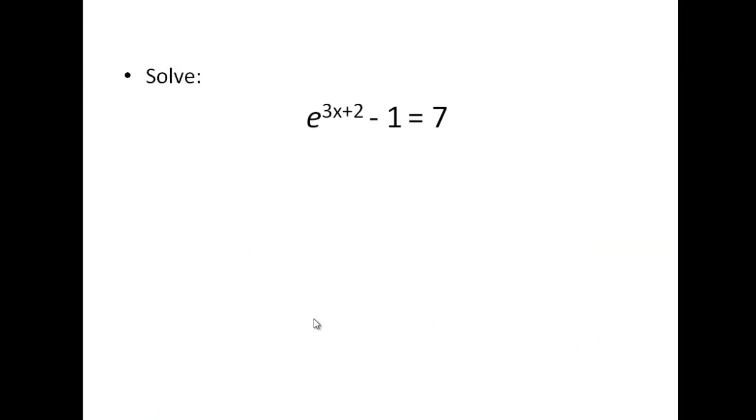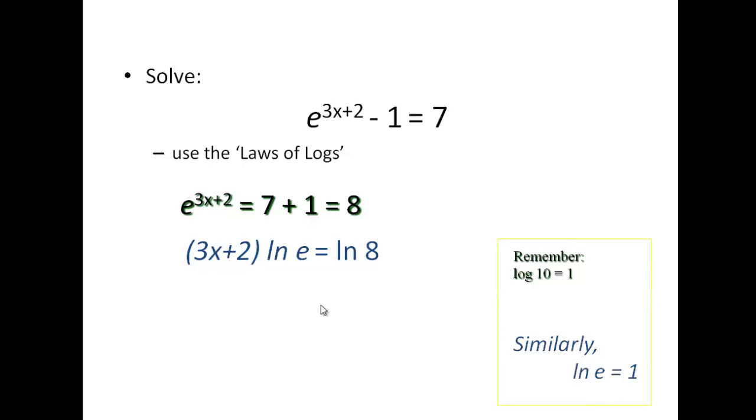And then here's another example. This time let's get rid of that one first. And then again log both sides, remembering that ln e is 1, a bit of manipulation, subtract the 2, divide by 3 and we get x equals 0.026.